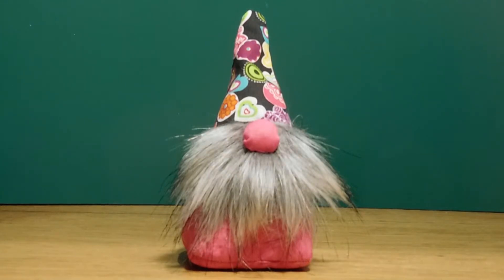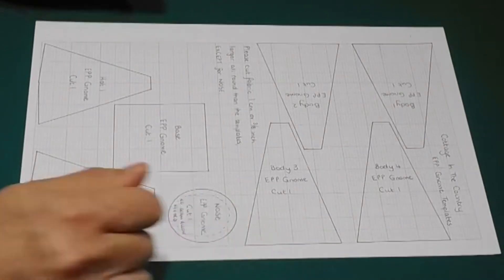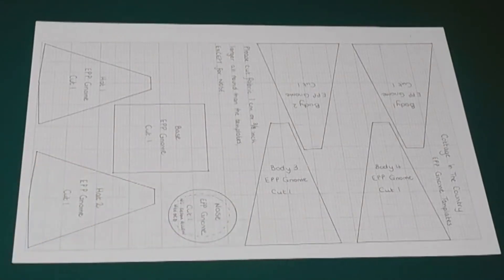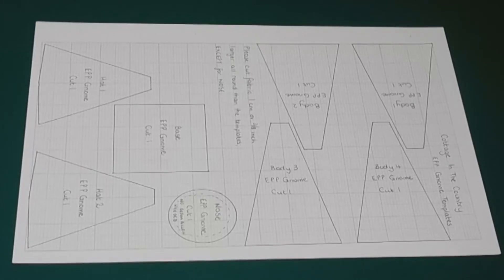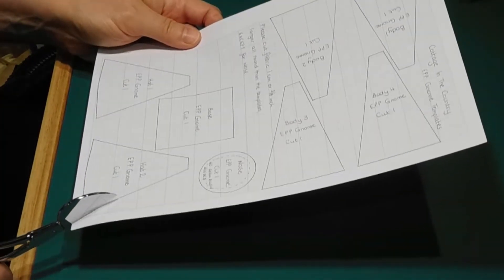The body and the hat are English paper piecing but the nose is not. For those without access to a funnel, a pattern for one of these is on the second PDF sheet together with a couple of optional hats which are not English paper pieced.